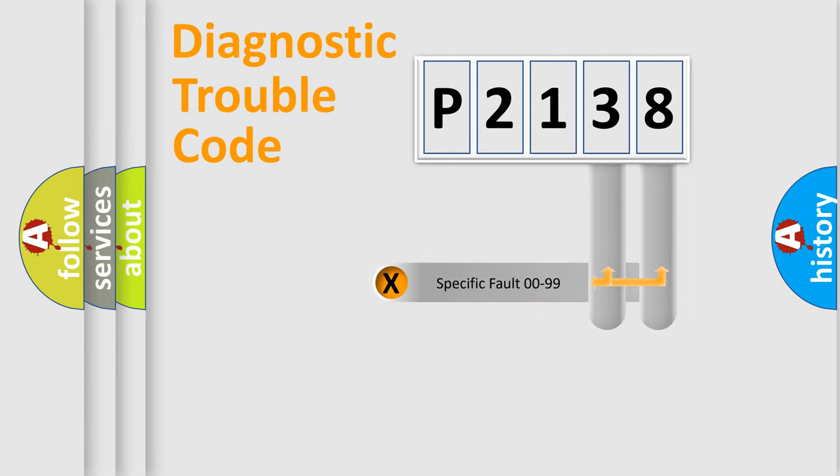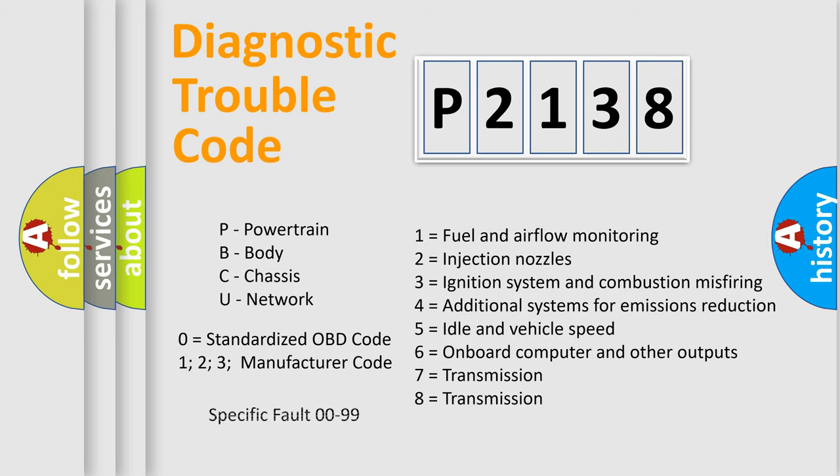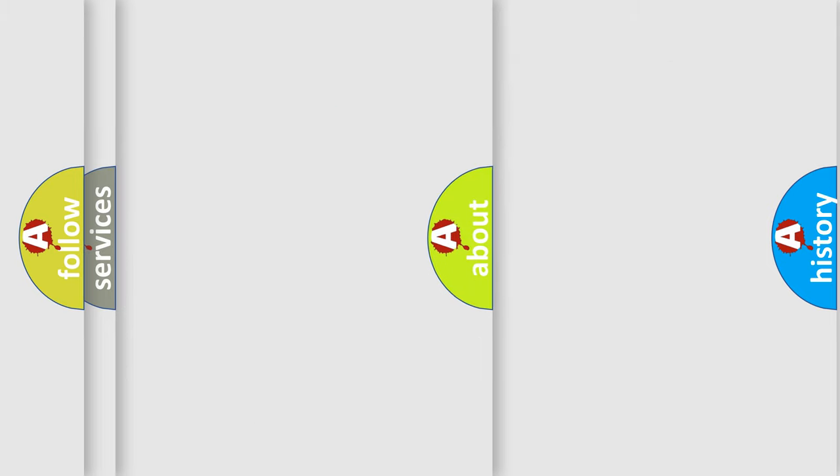Only the last two characters define the specific fault of the group. Let's not forget that such a division is valid only if the second character code is expressed by the number zero.